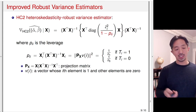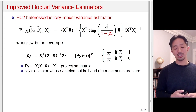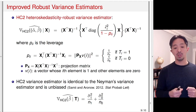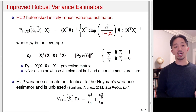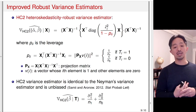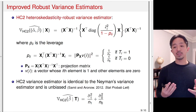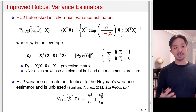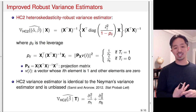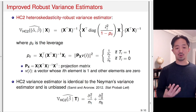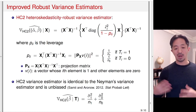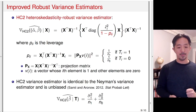The HC2 heteroskedasticity-robust variance estimator turns out to be identical to Neyman's variance estimator, and is therefore unbiased. For this reason, many researchers use the HC2 estimator to estimate causal effects using linear regression, even when additional covariates are included in the regression model.